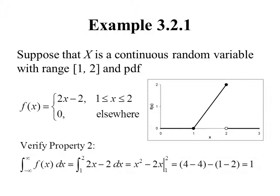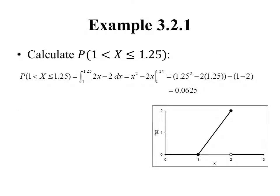We can also verify geometrically: the area under the curve is a triangle with base 1 and height 2, so one-half times base times height equals 1. To illustrate property 3, let's calculate P(1 ≤ X ≤ 1.25). We integrate the PDF from 1 to 1.25, where f(x) = 2x − 2 (note: 2x − 1 evaluated), and we get the small probability of 0.0625. This is small because there is not much area under the density curve between 1 and 1.25.